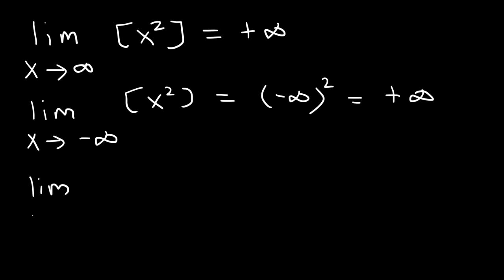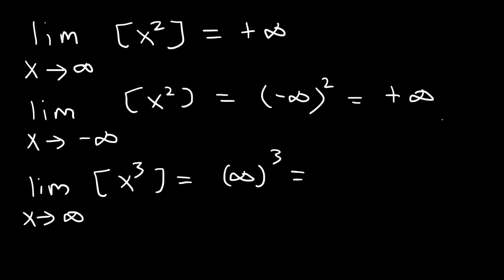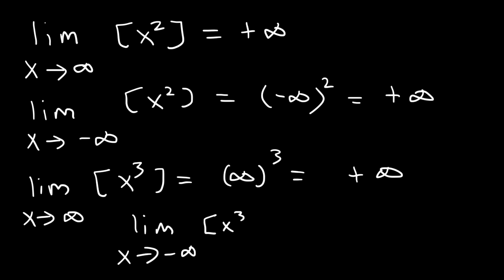What about the limit as x approaches infinity for positive x cubed? Infinity to the third power is still a large positive number, so that's positive infinity. And as x approaches negative infinity, because it's raised to the third power, it's going to be negative — so the final answer is negative infinity.